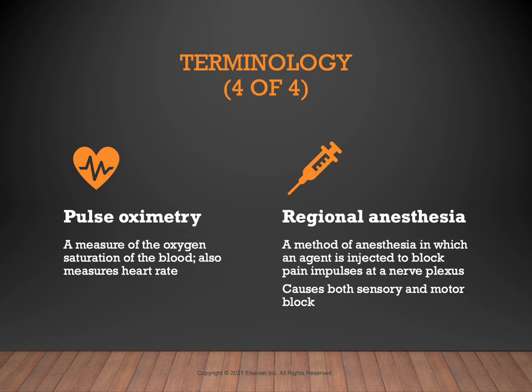The last two terms to review are pulse oximetry and regional anesthesia. Pulse oximetry is one of the most common physiological functions monitored in surgical patients — it measures the level of oxygen saturation in the patient's blood and can also measure heart rate. Regional anesthesia is administered to a group of nerves, often called a plexus, and blocks pain impulses at that nerve plexus. It's important to note that regional anesthesia causes both sensory and motor block, so the patient will not be able to feel anything or move their limb.